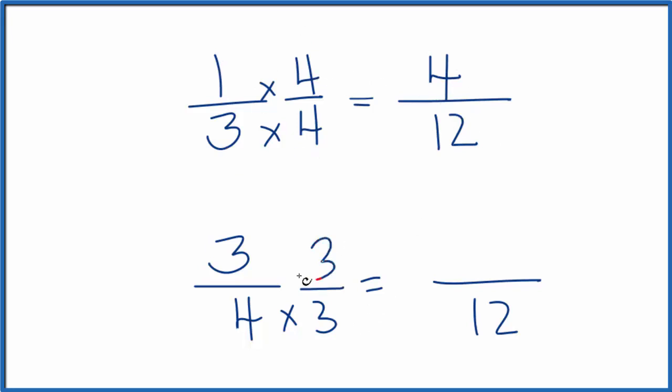On the bottom, I'll multiply the top and the bottom by 3. So 3 times 3 is 9. Now I have 9/12. Again, that's equivalent to 3/4. But now we have that common denominator.